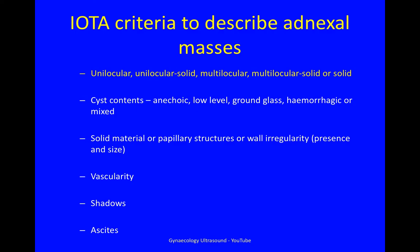They use various criteria to describe adnexal masses, and we're going to be talking about locularity — whether a mass is unilocular, unilocular solid, multilocular, multilocular solid, or solid.